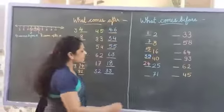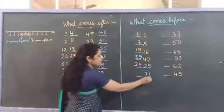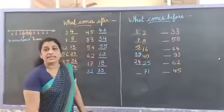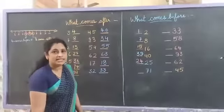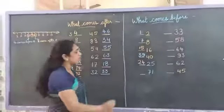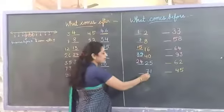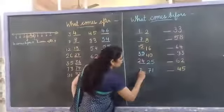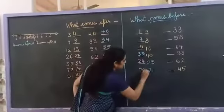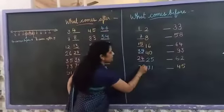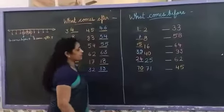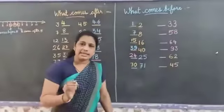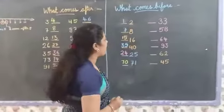And next — which number is this? 71. 71 ke pehle kya hota hai? 7, 0 — that is 70. 70 comes before 71.